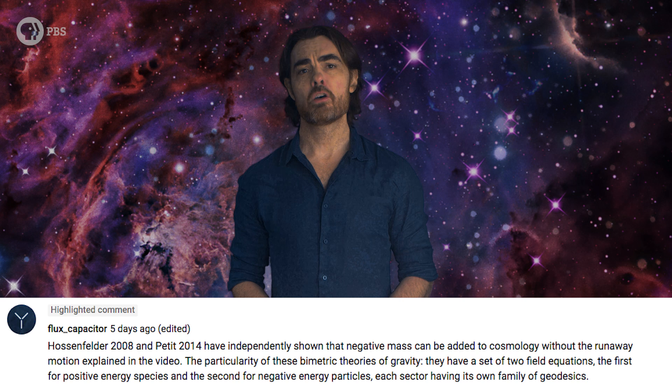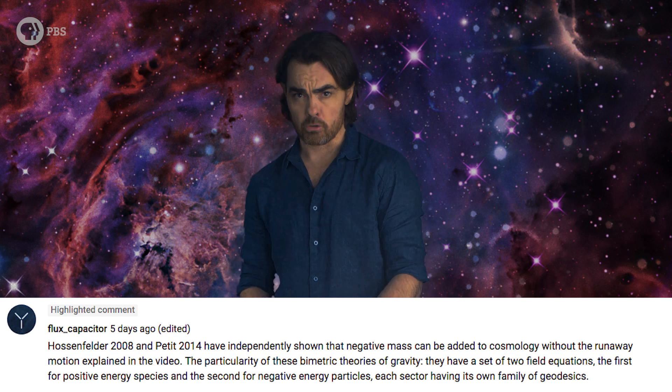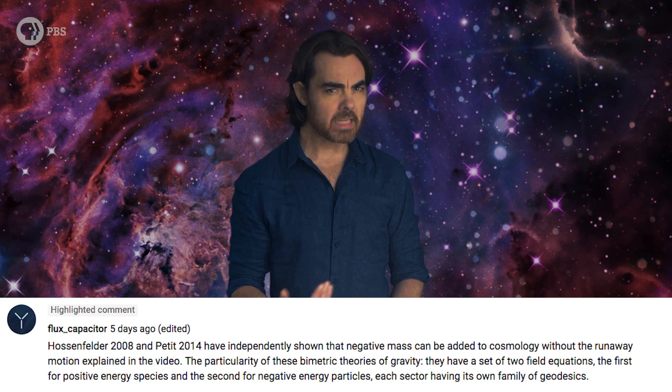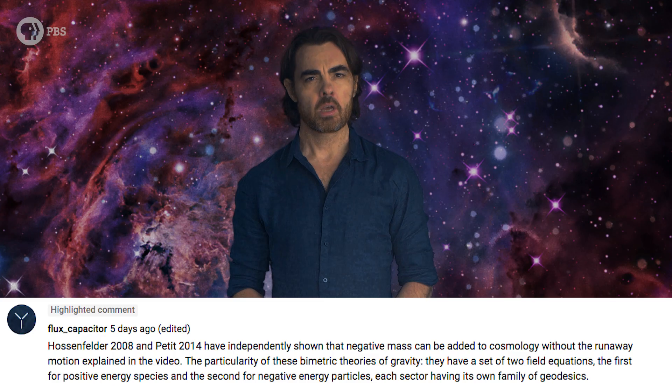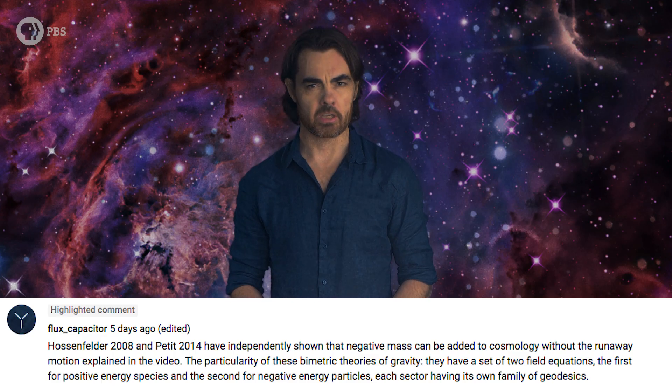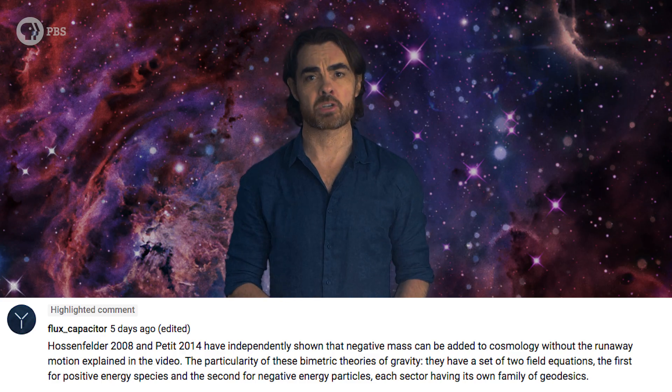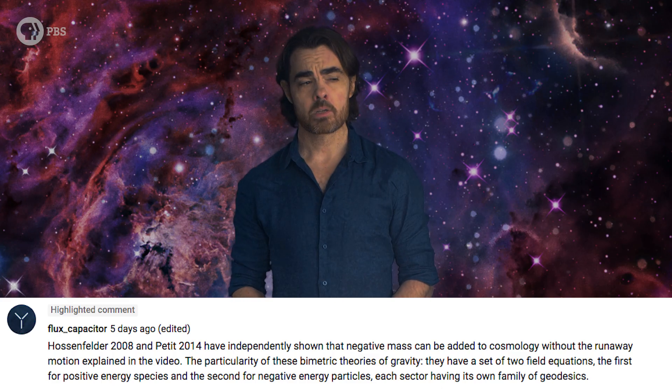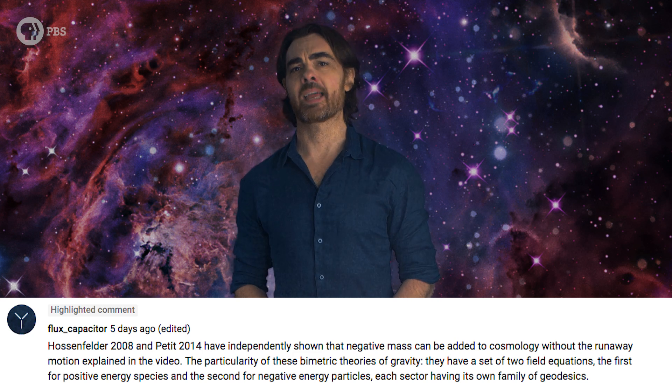Flux capacitor notes an alternate model for how negative mass might behave. In so-called bimetric gravity, you can have positive and negative masses, but each is described by its own set of Einstein field equations. That's kind of like having parallel spacetimes, one with positive and one with negative masses, which can still interact gravitationally. In these models, like masses attract and opposite masses repel, but you don't get the crazy runaway motion that occurs if you put both positive and negative masses in the same spacetime, so no perpetual motion machines. It can also be used to explain dark energy and dark matter. An example is the Janus model of Jean-Pierre Petit. This is a much more sophisticated model than the one by Jamie Farnes. It is, however, just as speculative.